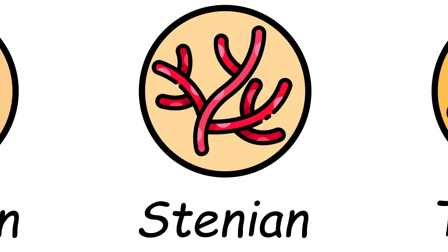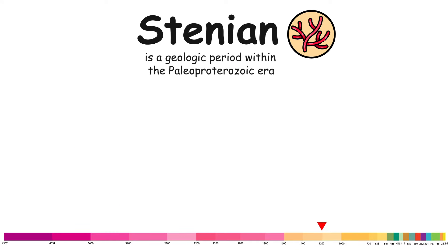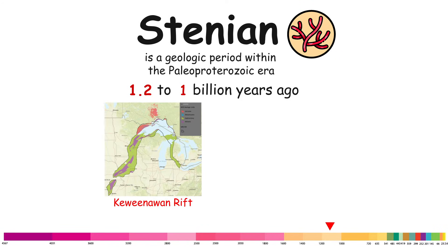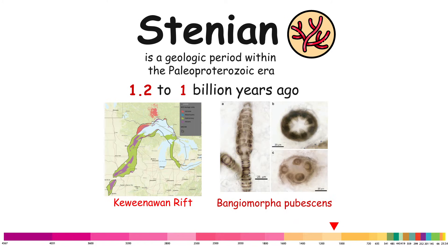Stenian. The Stenian is a geologic period within the Mesoproterozoic era, spanning approximately from 1.2 to 1 billion years ago. This period includes the formation of the Keweenawan Rift at about 1.1 billion years ago, and fossils of the oldest known sexually reproducing organism, Bangiomorpha pubescens, first appeared in the Stenian.